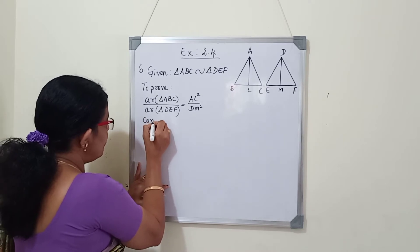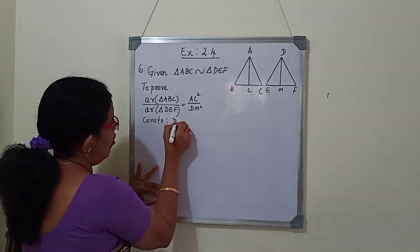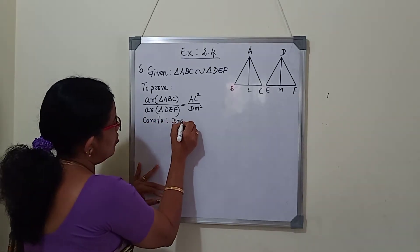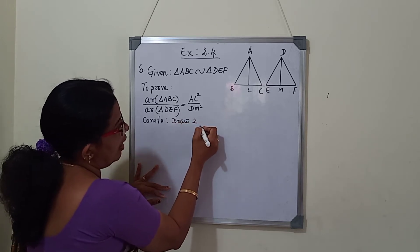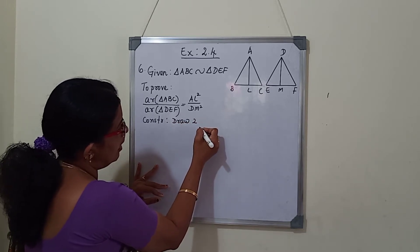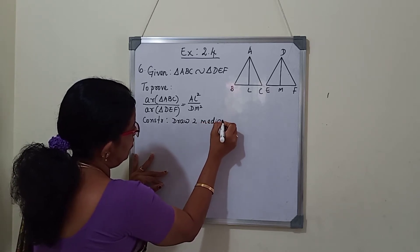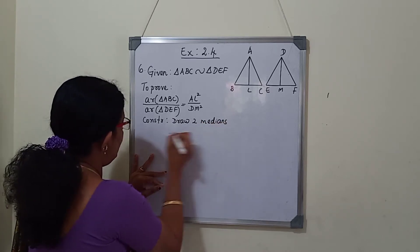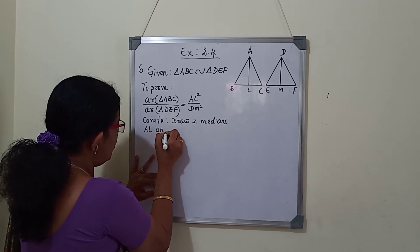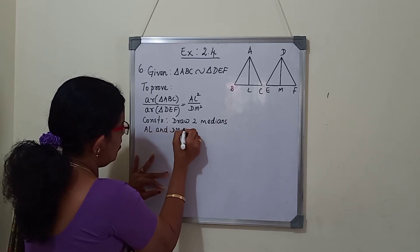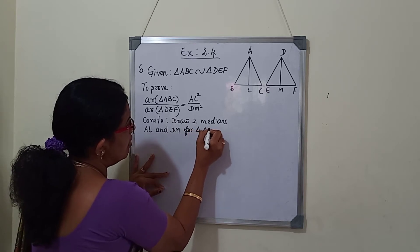Construction: draw two medians, AL and DM, for triangles ABC and DEF.